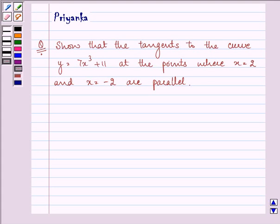Hello friends, how are you all doing today? The question says, show that the tangents to the curve y = 7x³ + 11 at the points where x = 2 and x = -2 are parallel.